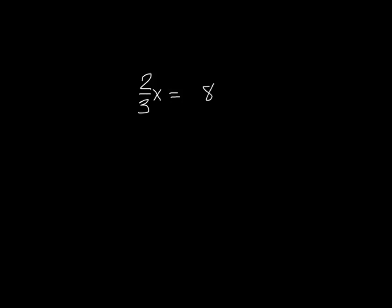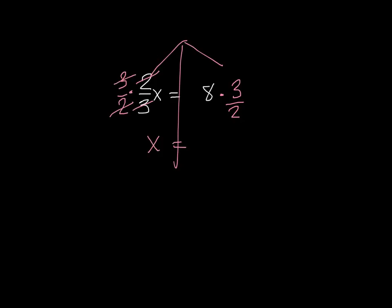One last problem: I have a two-thirds fraction being multiplied times X. We said if you're multiplying, to get rid of it you need to divide. But if I divide by a fraction, I multiply by the reciprocal. So I'll go straight to multiplying by the reciprocal — that way I have less writing to do. I have to keep it balanced, so I multiply by three-halves on both sides. The twos cancel and the threes cancel on the left, so I just get X equals. On the right I make the 8 into 8/1, two goes into eight four times, and four times three is twelve. So X equals 12. When multiplying by a fraction, you can just multiply by the reciprocal on both sides.